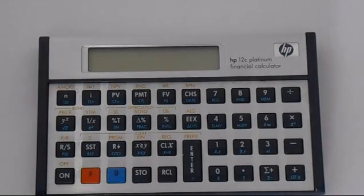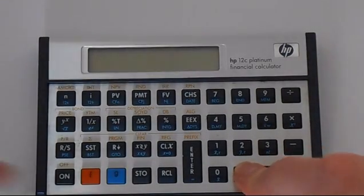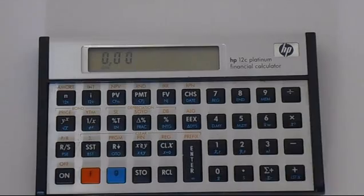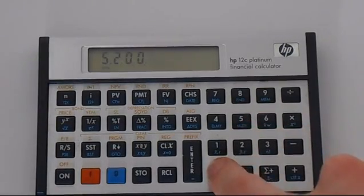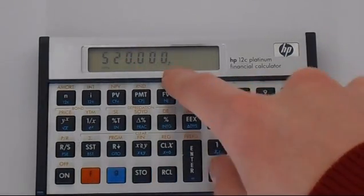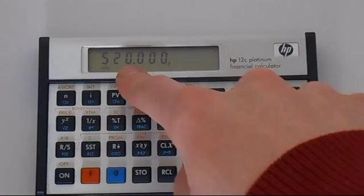So turn off the calculator, hold down the dot button and then press on and then you have that in this form. So you've got the comma here and the dot in the middle.